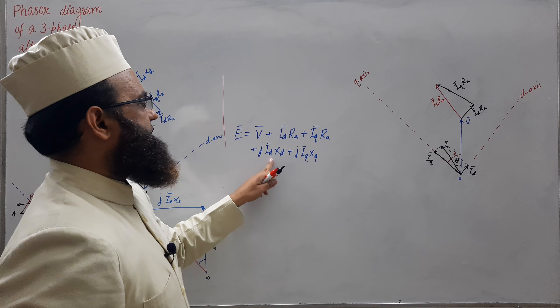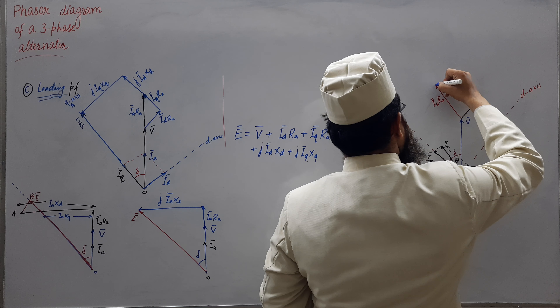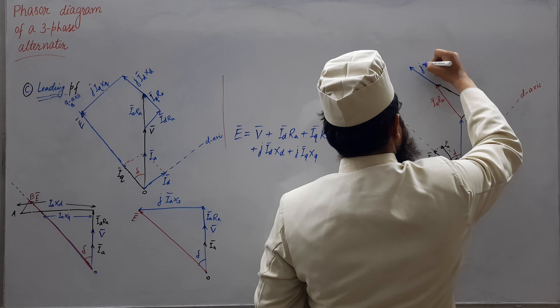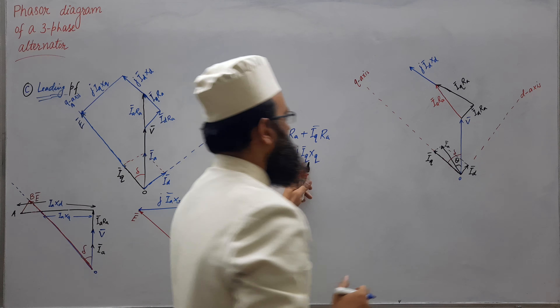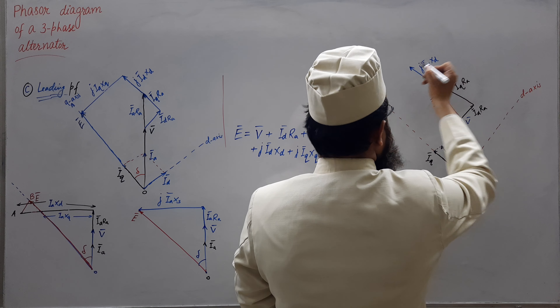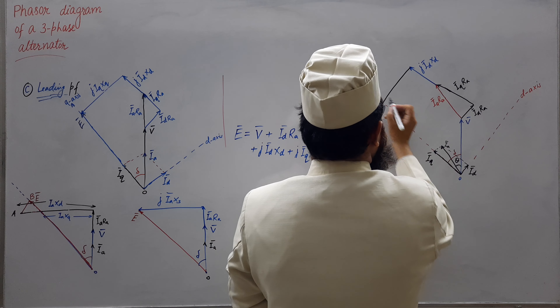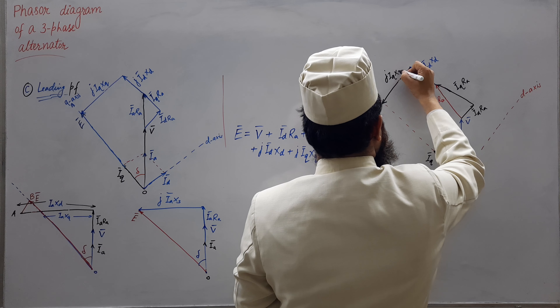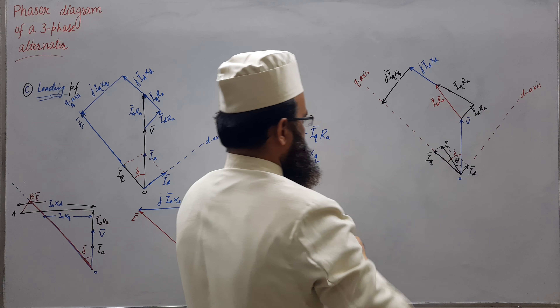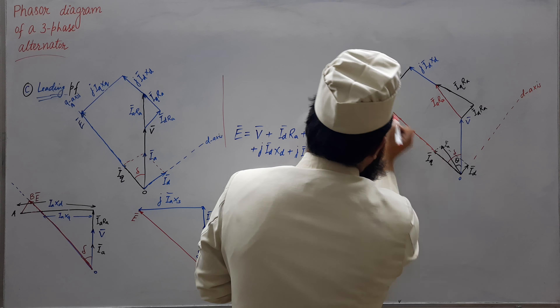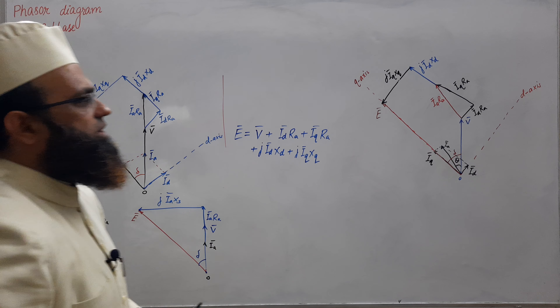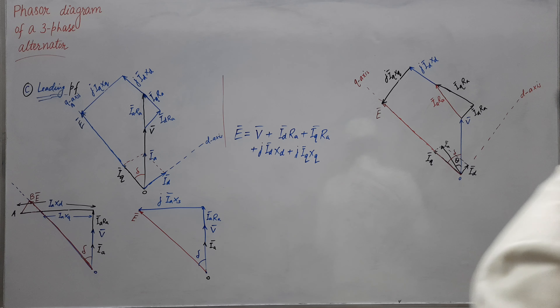Perpendicular to Id means along q-axis, so this is J·Id·Xd. Now draw it — J·Id·Xd — and the last term is J·Iq·Xq. Iq·Xq, rotated in anti-clockwise direction, will be parallel to d-axis. So J·Iq·Xq fine. This will be our per phase induced EMF e phasor — this is O to e, the per phase induced EMF.